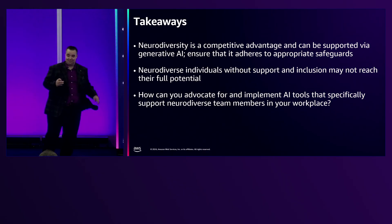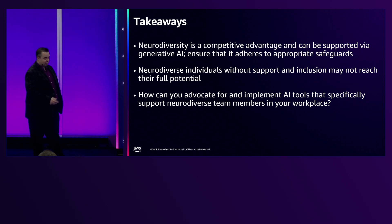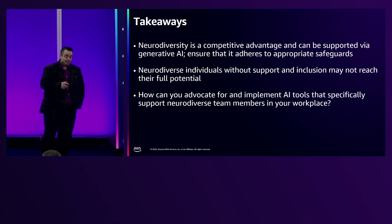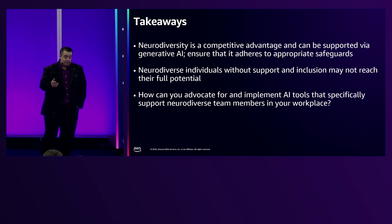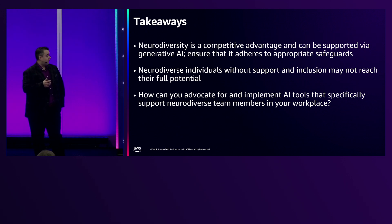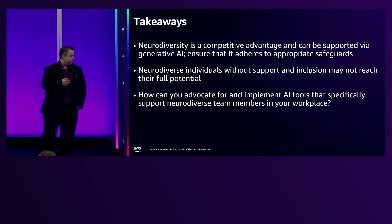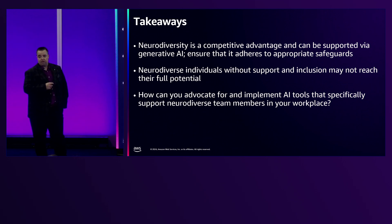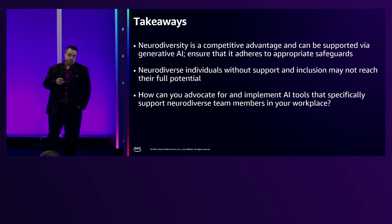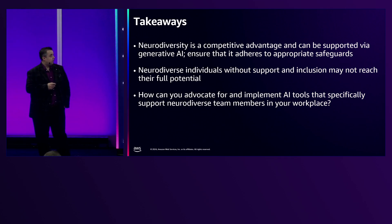It's a lightning talk — I had to squeeze so much in. Some takeaways: neurodiversity is a competitive advantage and can be supported by Gen AI — ensure it adheres to appropriate safeguards. Neurodiverse individuals without support and inclusion may not reach their full potential. Manisha's statistics of only 16% of autistic adults in employment and 43% having lost a job because of lack of support — if our voices advocating for that can move those numbers, I consider that a win, especially knowing the future generations that come behind. The question I pose to all of you: how can you advocate for and implement AI tools that specifically support neurodiverse builders in your workplace?